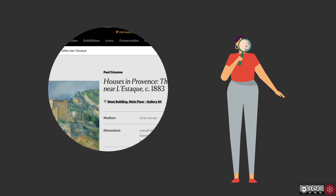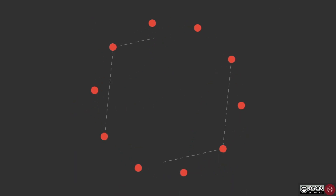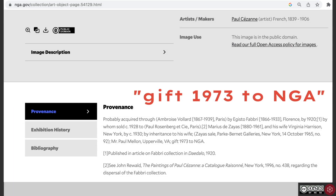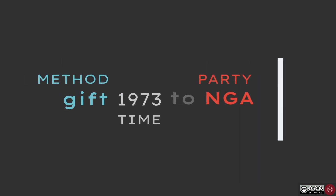Let's use the provenance text that we examined in tutorial 1 and hone our focus on a single provenance event, which, as discussed in that tutorial, is a historical event occurring in a chain of ownership of an artwork. In the provenance of Paul Zazan's painting Houses in Provence, for instance, let's take the event 'Gift 1973 to NGA.' Using different NLP tests, we can extract not only the event itself from the wider provenance text, but also all information contained within it, such as the method of transfer — here a gift — the time, 1973, and any parties involved, here the National Gallery of Art.